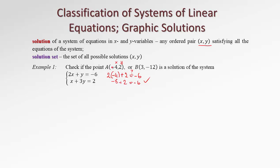But that doesn't make it a solution to this system of equations yet. We still need to check if the second equation is satisfied by this point. x, which is negative 4, plus 3 times y, which is 2 — is that equal to 2? We have negative 4 plus 6, which is 2. Yes, it does satisfy the second equation. Therefore, A is a solution.